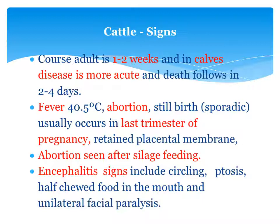Encephalitis signs include movement of the animal in circles (circling) and ptosis. Because of excitement, half-chewed food is observed in the mouth, and there is unilateral facial paralysis.